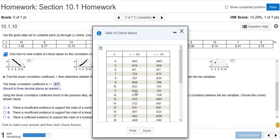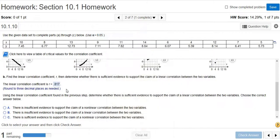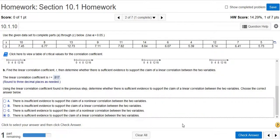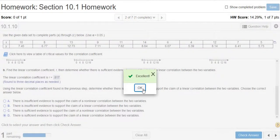Our R is bigger than that, so the answer is yes, there is sufficient evidence to support the claim of a linear correlation. Because R is 0.817, the critical value is 0.602, so R is bigger than the critical value. So there is sufficient evidence to support the claim of a linear correlation between the two variables. Boom.